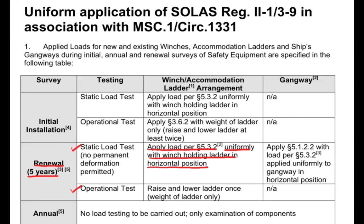The horizontal position is used because the maximum stress on the accommodation ladder occurs at the horizontal position — that is common sense. Again you apply load as per 5.3.2: check the manufacturer's manual for design load, say 100 kg; also check if there is a plate on the ladder showing maximum operational load of 80 kg, which is less than the design load, and test at that load.